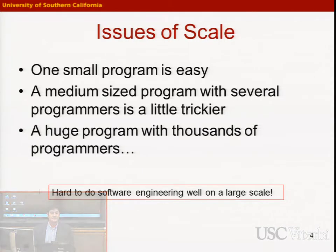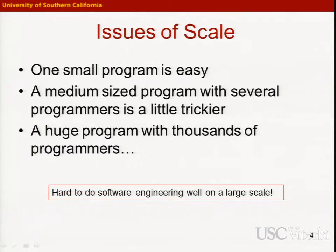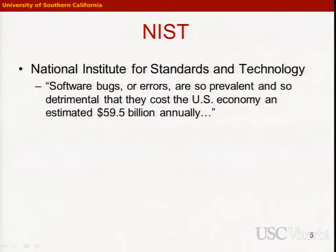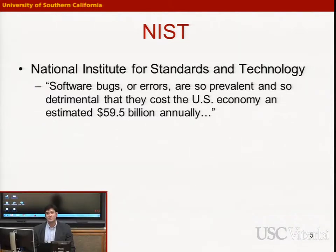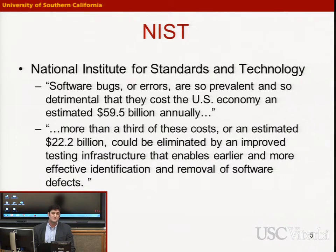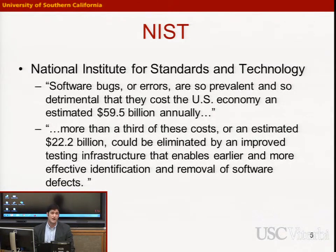It's hard to do software engineering well on a large scale. In fact, there have been many problems in software engineering. The National Institute for Standards and Technology has estimated that software bugs cost the U.S. economy almost $60 billion each year. Unfortunately, over $20 billion of that — about a third — could actually be prevented by using software engineering techniques such as testing that we already know how to do.